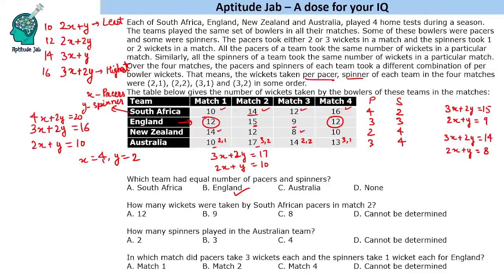How many wickets were taken by South African pacers in match 2? In match 2, South Africa took 14 wickets. With 4 pacers and 2 spinners, this corresponds to the 3-1 case (3 per pacer, 1 per spinner), so total wickets taken by pacers will be 4 × 3 = 12 wickets.